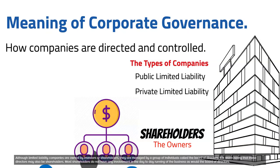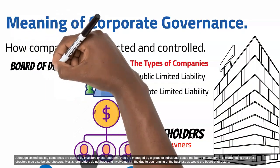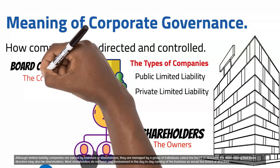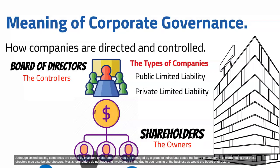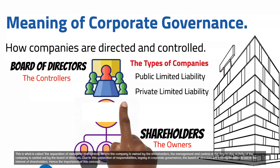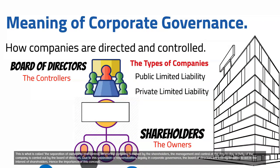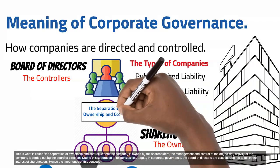Although limited liability companies are owned by investors or shareholders, they are managed by a group of individuals called the board of directors. It is worth noting that these directors may also be shareholders. Most shareholders do not have any involvement in the day-to-day running of the business as with the board of directors. This is what is called the separation of ownership and control, where the company is owned by the shareholders but the management and control of the day-to-day activity is carried out by the board of directors.